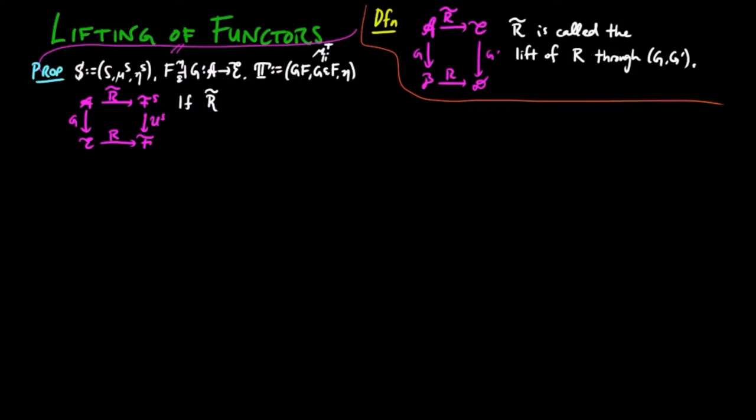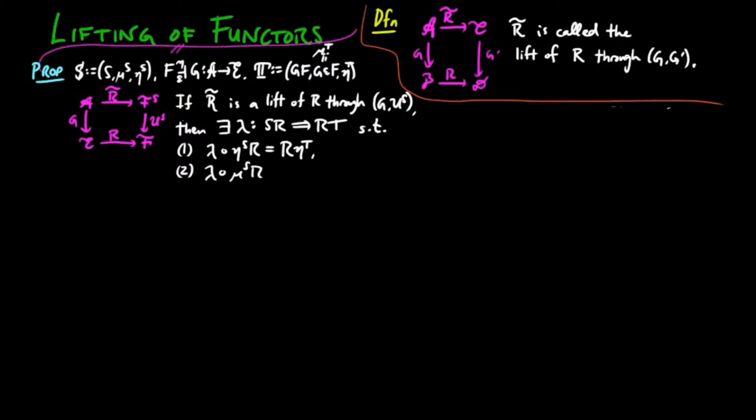Then if r tilde is a lift of r through g u s, then there exists a natural transformation lambda from s r to r t, such that lambda eta s r is equal to r eta t, and lambda mu s r is equal to r mu t lambda t s lambda.